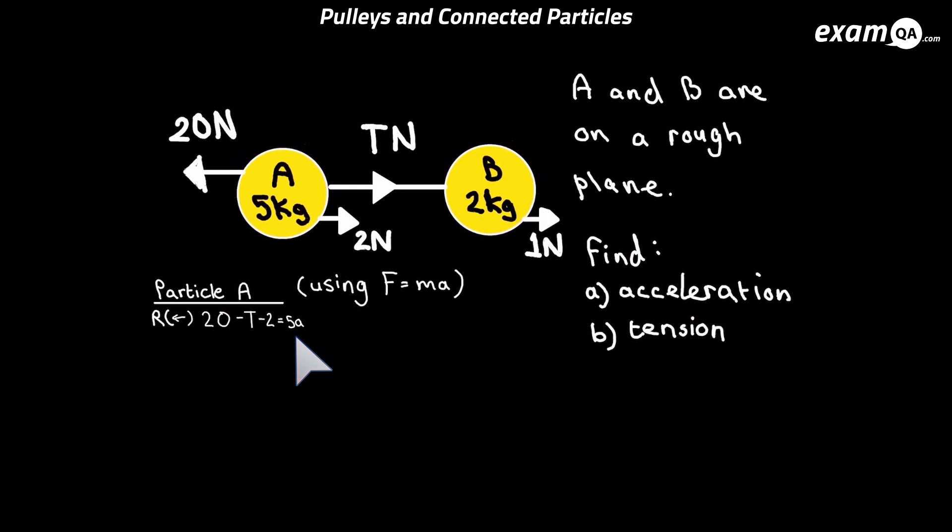Now we can do something similar for particle B. You can see I've changed the direction of tension, because now we're looking at particle B. B would be sitting there still, but it's not. It's going to move. And why is it going to move? Well, it's that rope again. It's moving it to the left, so it's giving a tension force to the left.